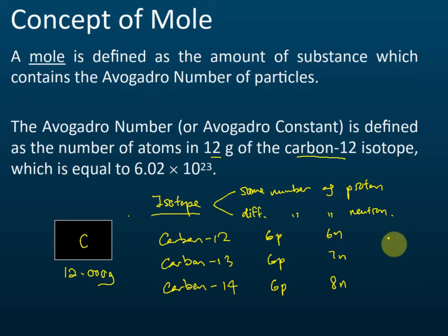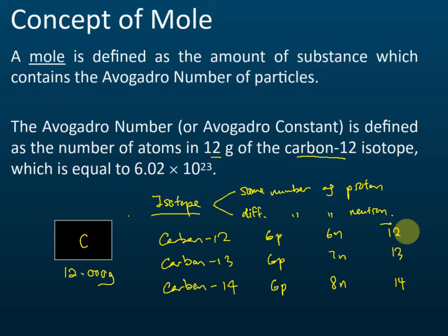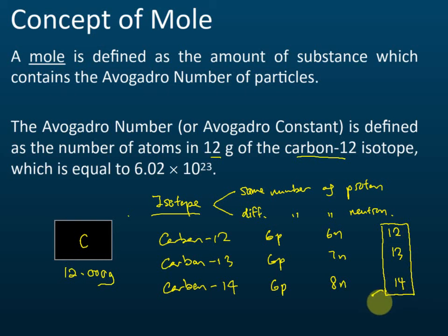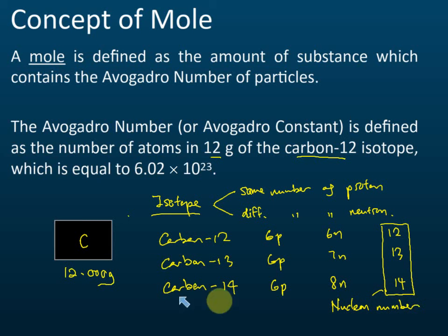The nucleon number is the number of protons plus neutrons. For carbon-13, the nucleon number is 13; for carbon-14, the nucleon number is 14. Protons plus neutrons gives you the nucleon number.